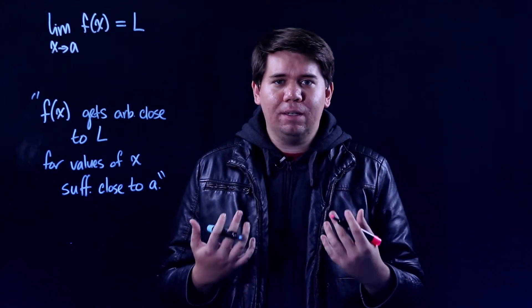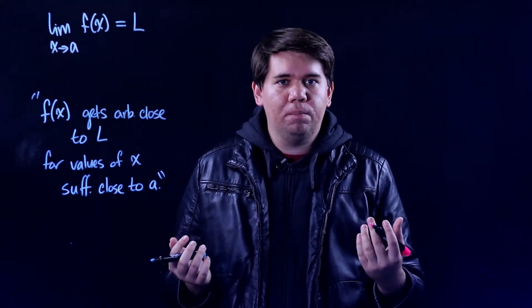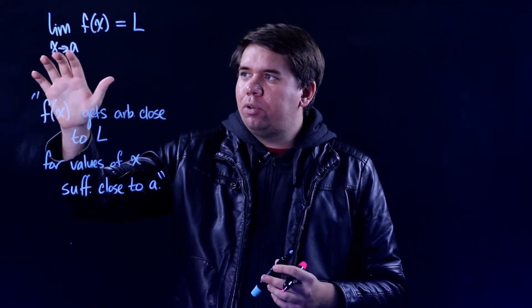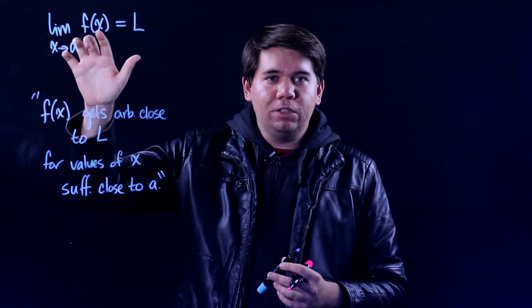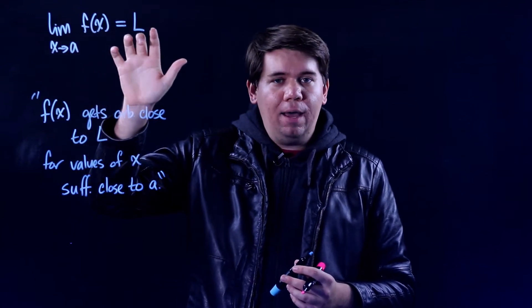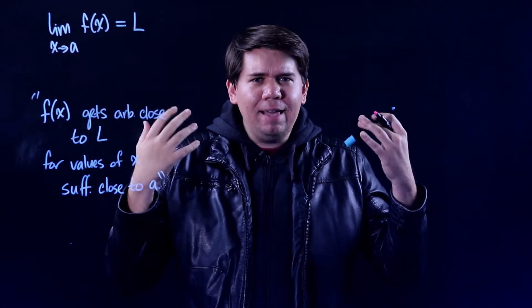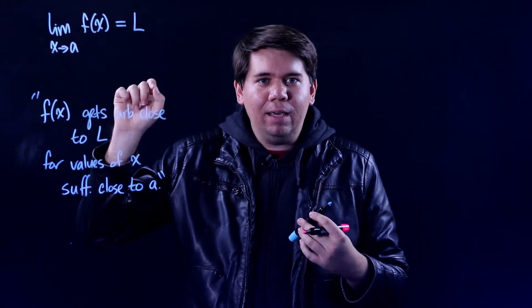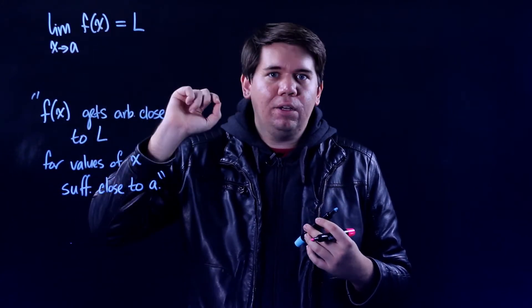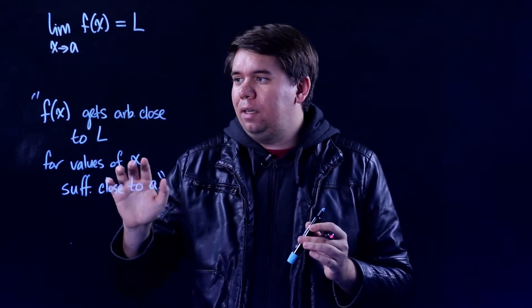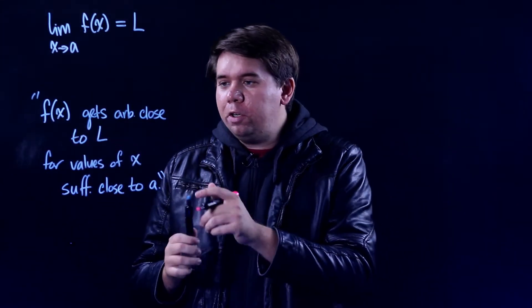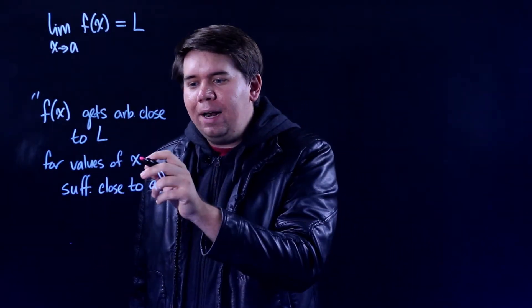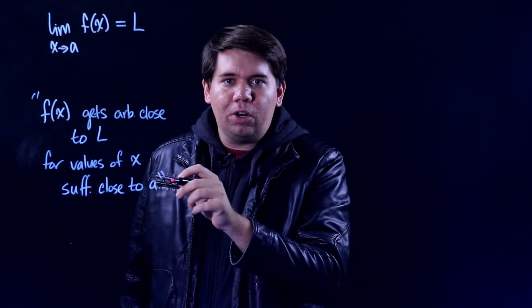In this video we want to give the definition of a limit and try and make sense of what it means. When I write the limit as x approaches a of a function f(x) is equal to L, what you should think that means intuitively is that as x gets really close to a, then your function is going to get really close to L. Or more precisely, your function gets arbitrarily close to L, as close as you want, for values of x that is sufficiently close to a.